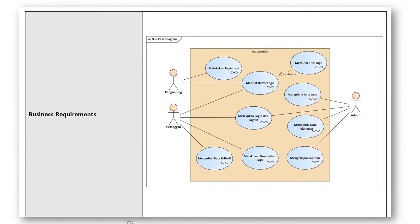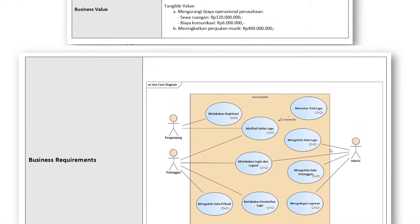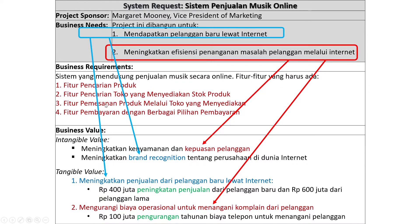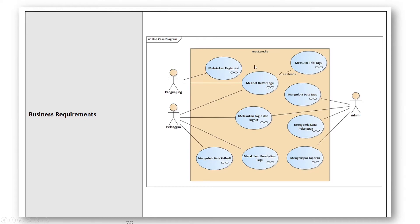Business requirements bisa dibentuk dalam bentuk use case diagram. Jadi yang awalnya business requirement berisi fitur apa saja — pencarian produk, pencarian toko, dan lain-lain — bisa kita buat dalam bentuk use case diagram. Dengan dibentuk use case diagram-nya, kita juga bisa mendapatkan use case point, di mana use case point ini nanti bisa digunakan untuk mendapatkan man-month: berapa pengembang yang dibutuhkan dan berapa bulan software ini bisa dikerjakan.